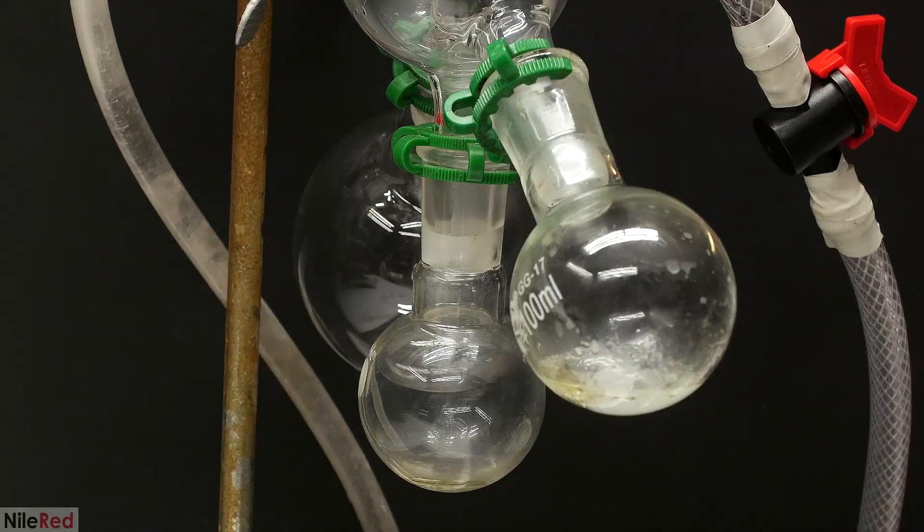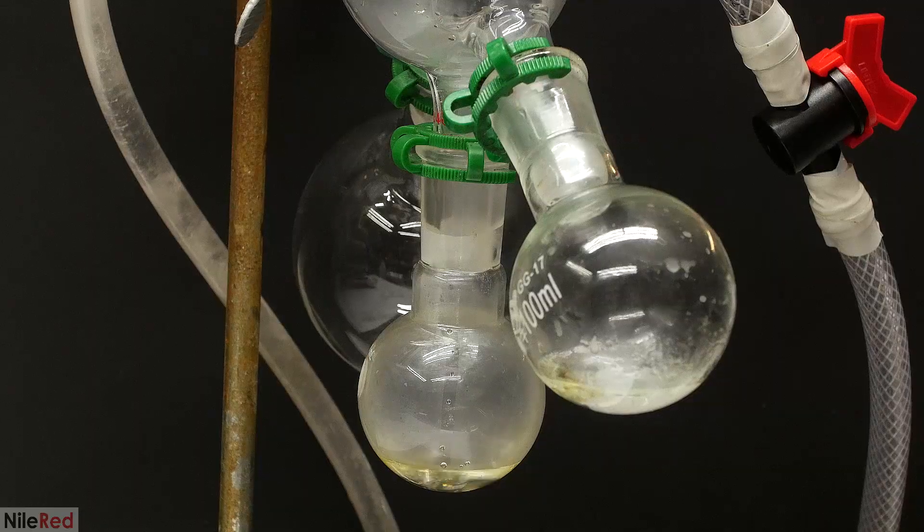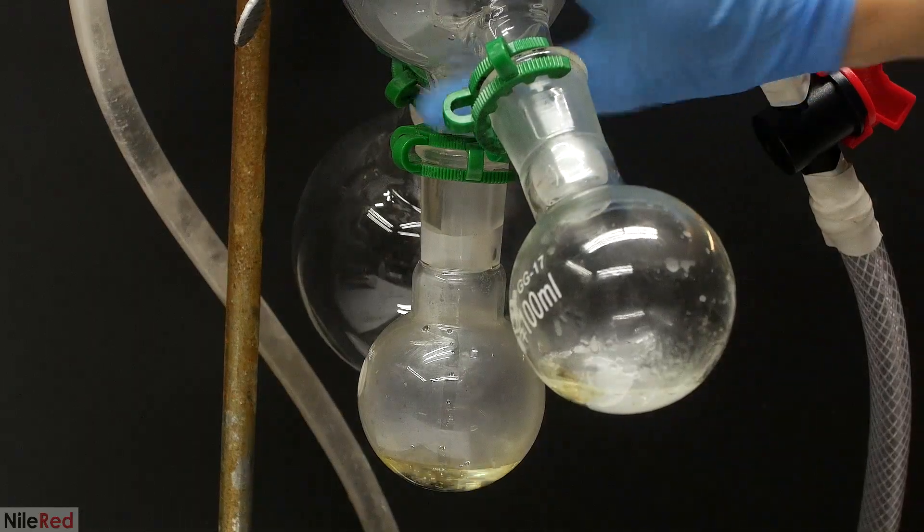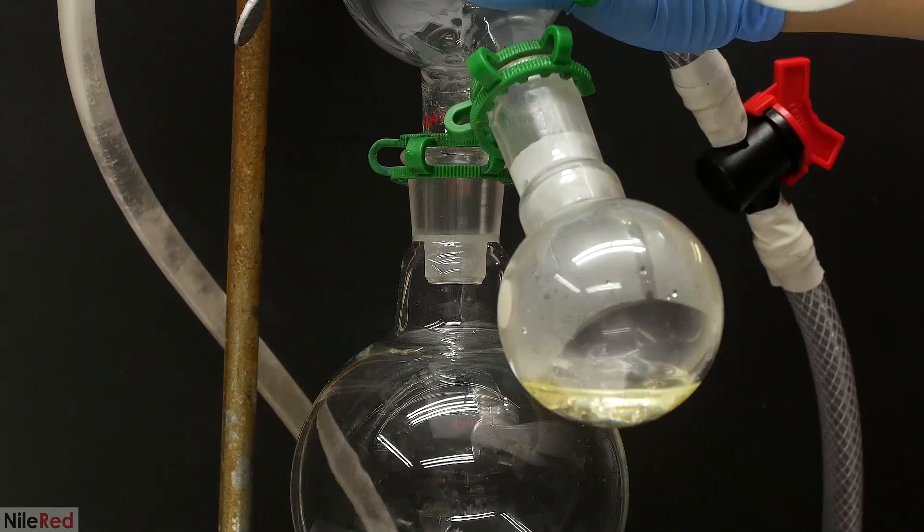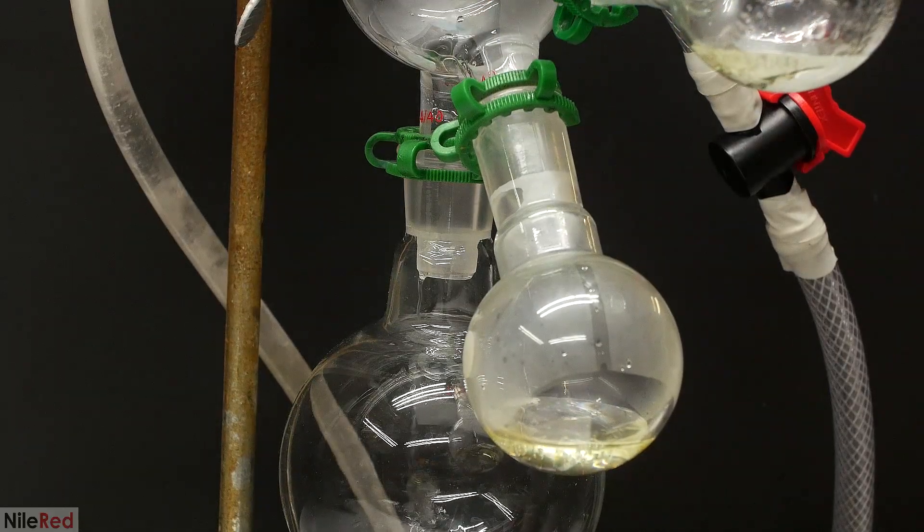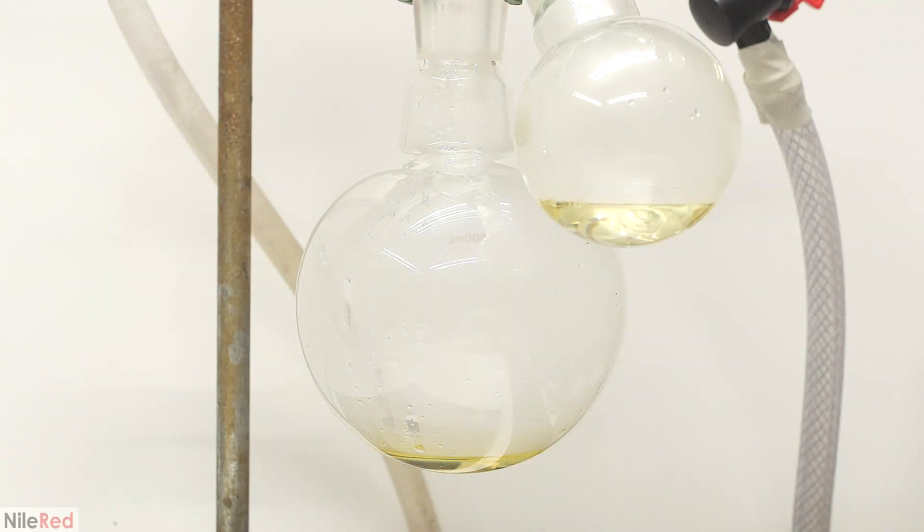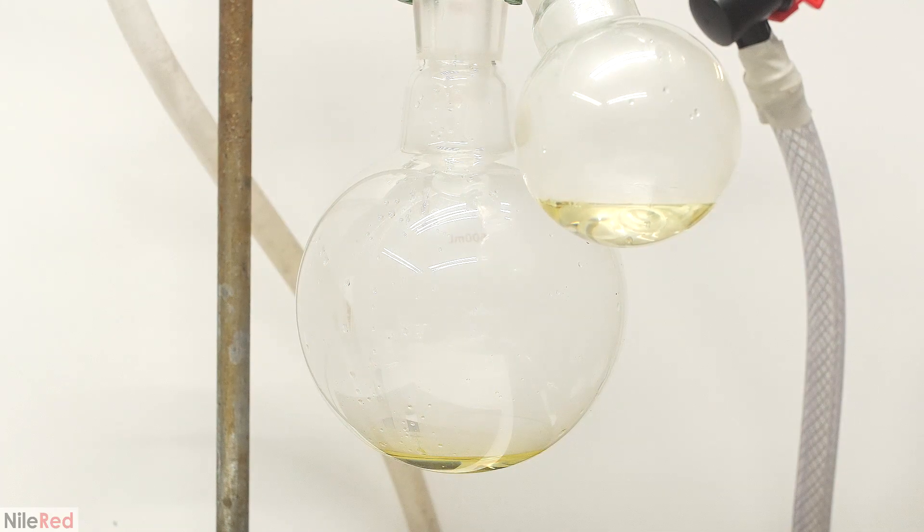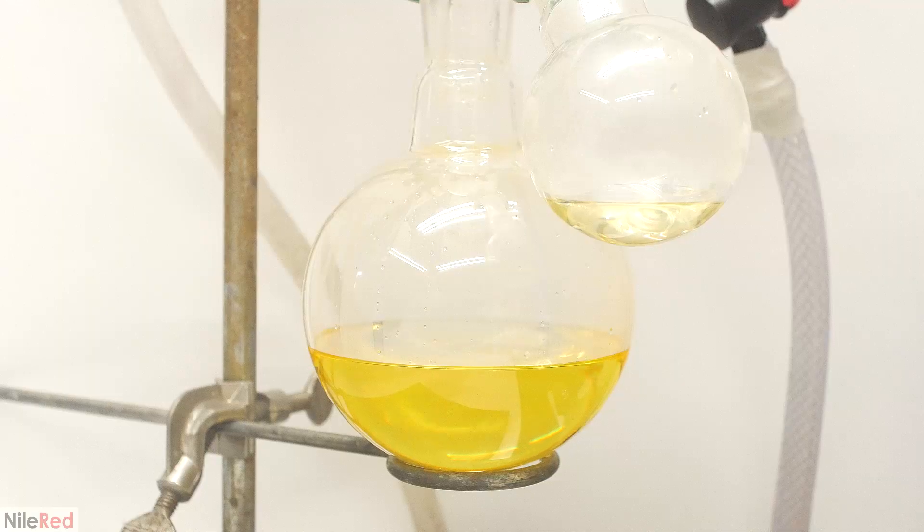I continue collecting things in the middle flask, until I'm sure there's no more water coming over. When I think it looks good and water-free, I turn it again to collect everything in the large one. It's now just a matter of waiting until everything distills over. It's eventually done when there's only a small amount left in the distillation flask.